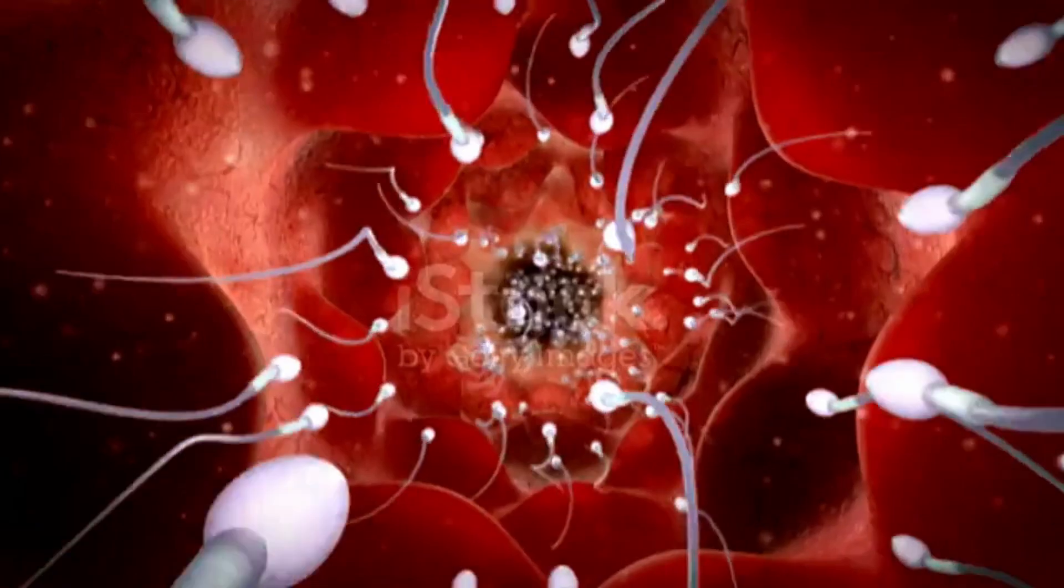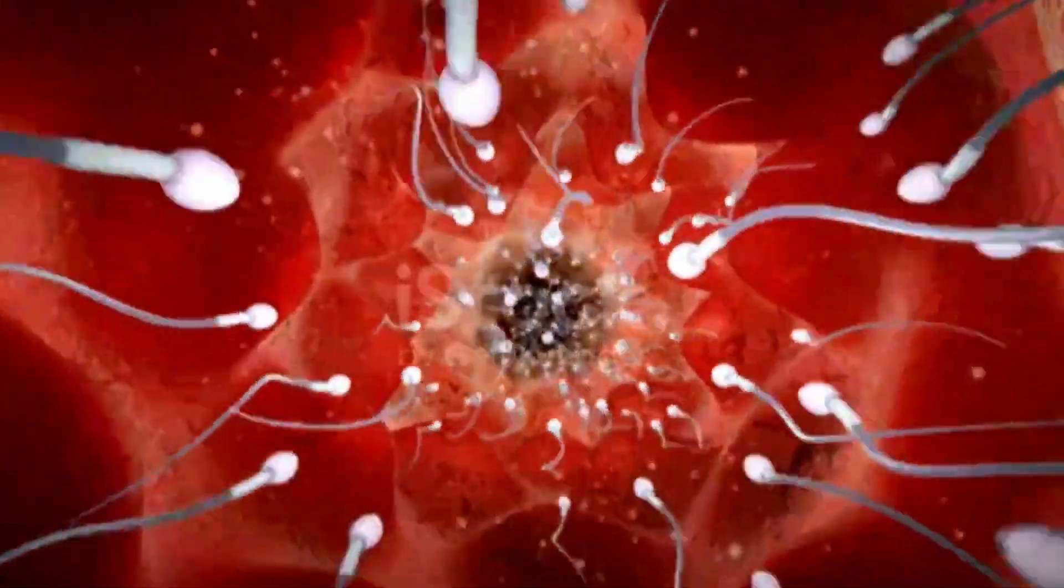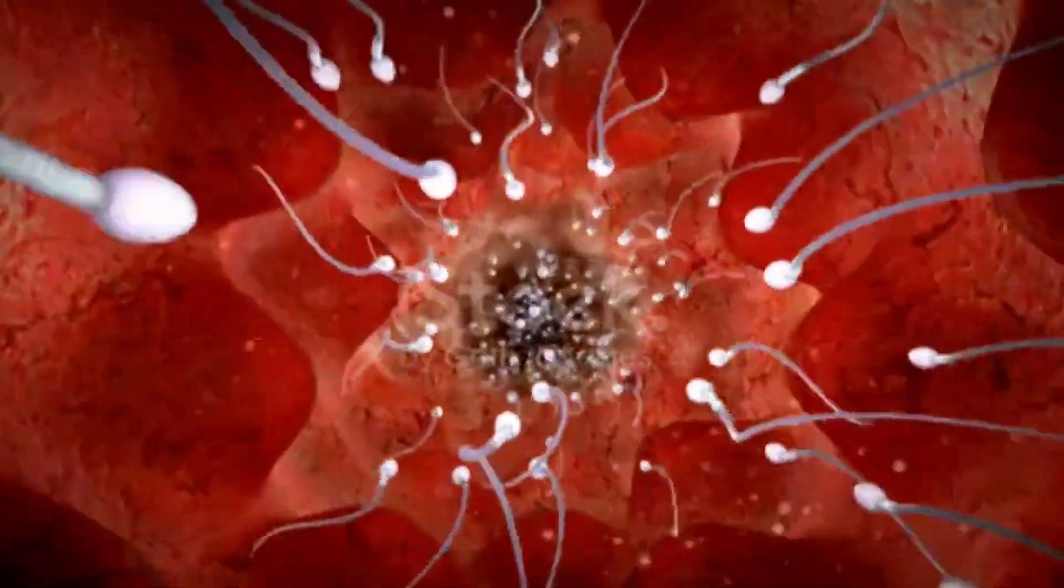Next, the sperm must pass through the cervix, an opening into the uterus. Usually it remains tightly closed, but the cervix is open for a few days while the woman ovulates. The sperm swim through the cervical mucus, which is thinned to a more watery consistency for easier passage.